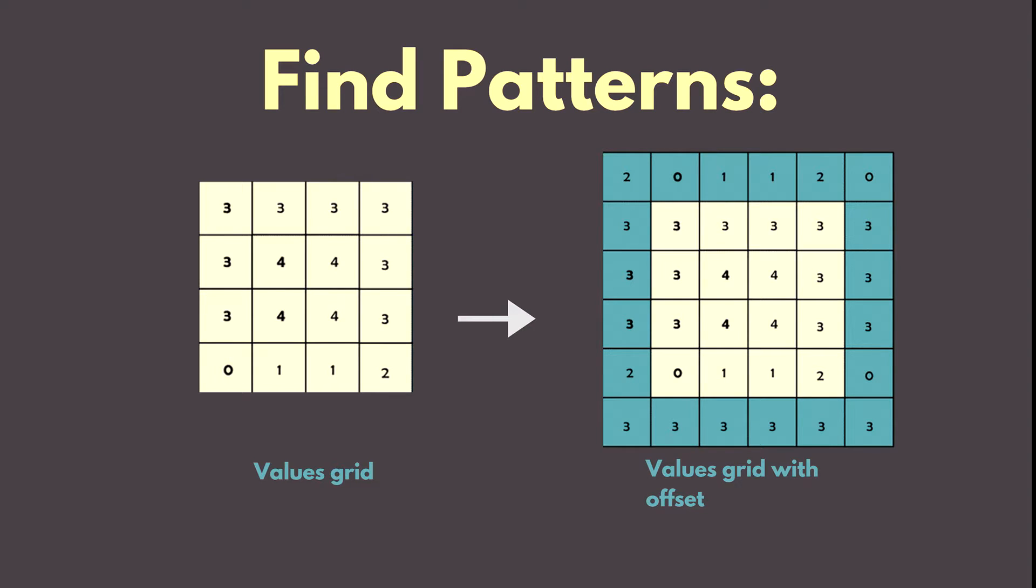Fortunately, there is a simple solution. We will create an offset. The grid of values will be treated as a seamless texture. So we will just repeat the same values grid on the right, on the left, up, down and on the diagonal to create an offset of values. And the pattern size that we set is very important because the offset must be the larger, the bigger the size of our pattern.